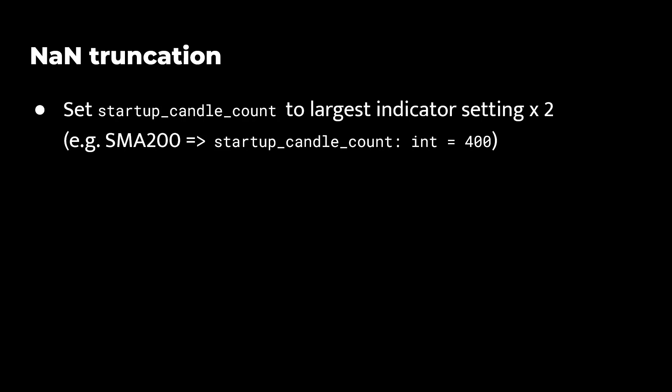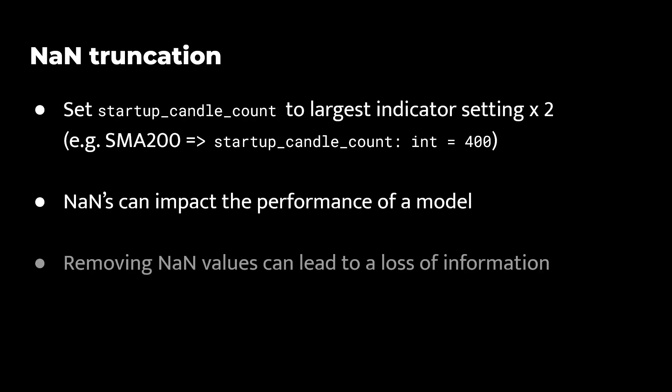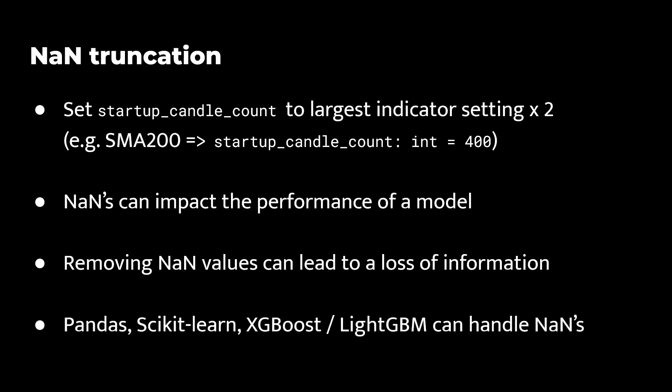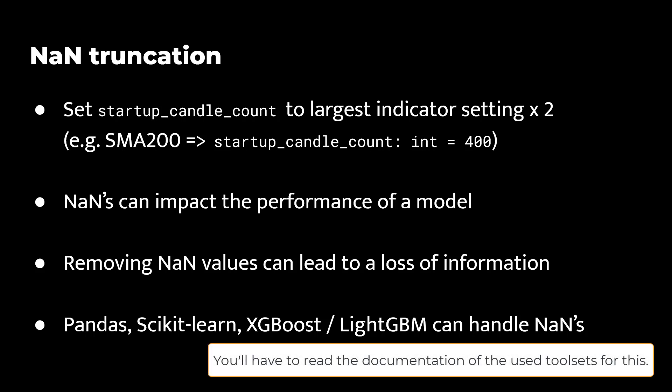None values are often encountered when dealing with data sets and they can adversely affect the performance of machine learning models if not handled properly. However, just removing all these none values can lead to a loss of information, and it may affect the representativeness of your data set. So you should always consider when truncated data sets are still suitable for analysis or machine learning tasks. There are multiple ways to handle nones, with Pandas, scikit-learn, XGBoost, or light GBM and more, but always keep in mind the negative aspects as I just mentioned here. Oh and by the way, the documentation of FreqTrade does not really mention none-truncation any further within this context, as far as I could find.